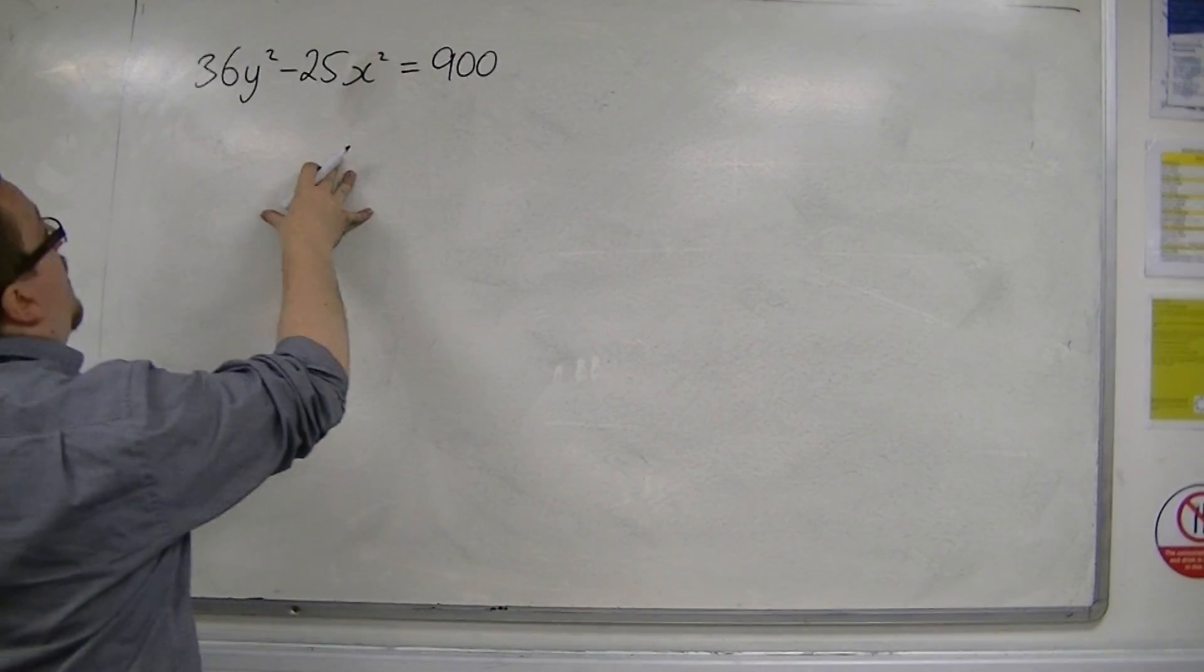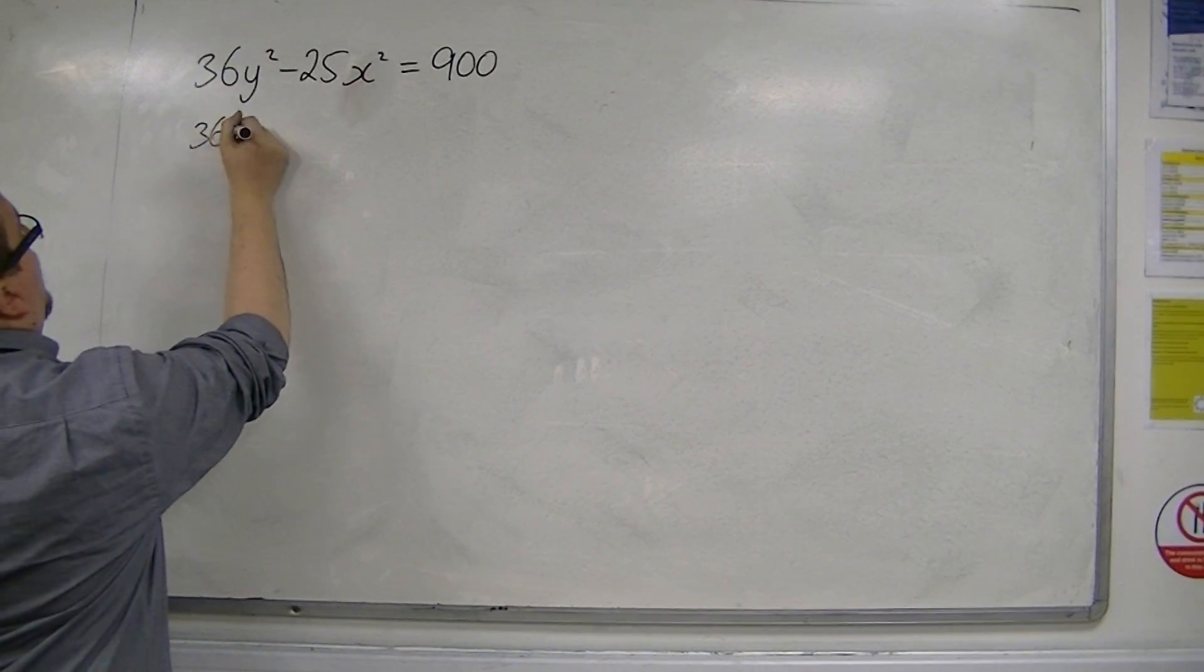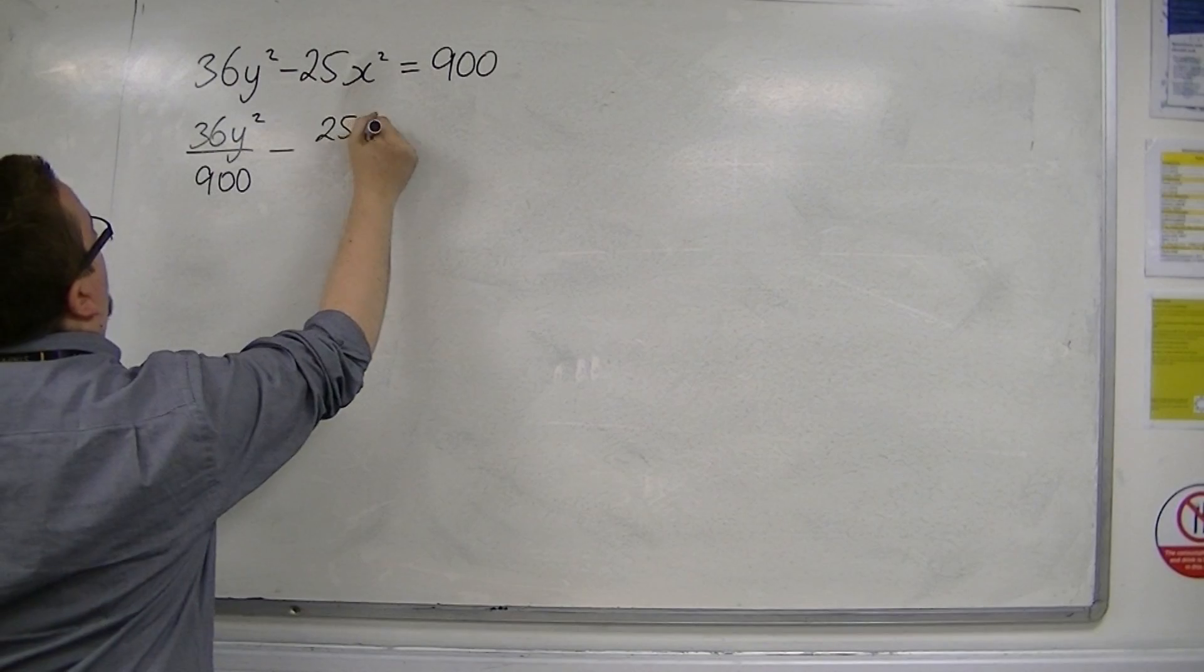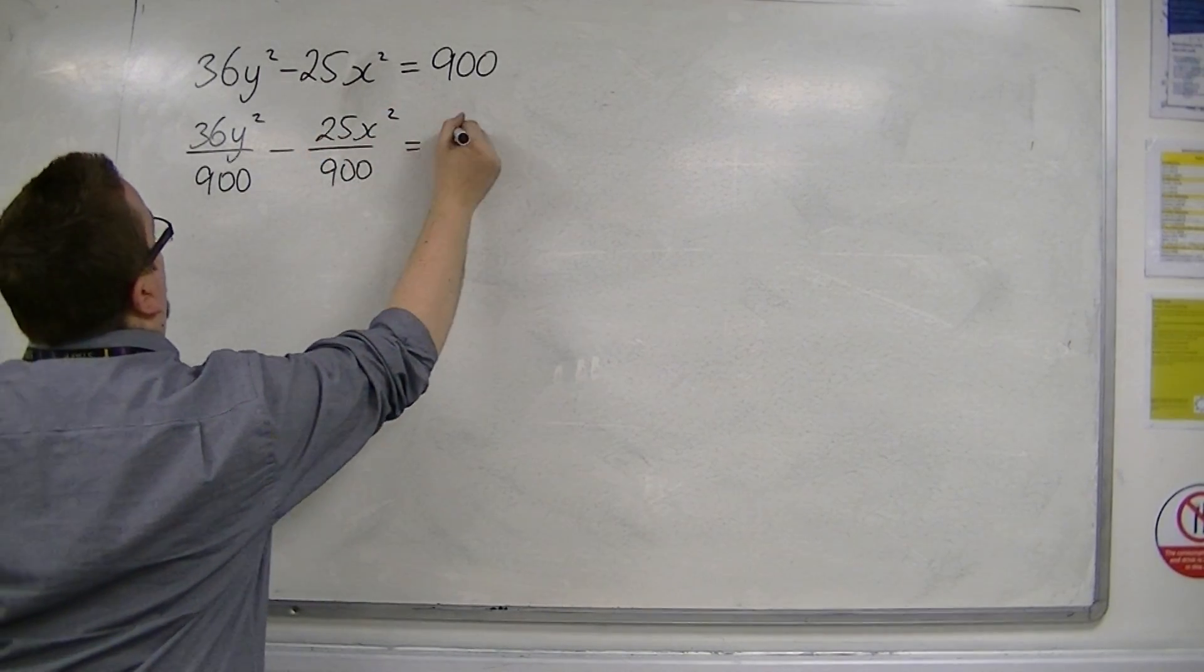I'm going to divide both sides by 900 first. So we've got 36y squared over 900, take away 25x squared over 900 equals 1.